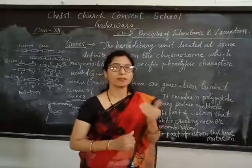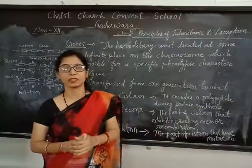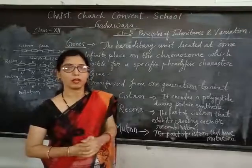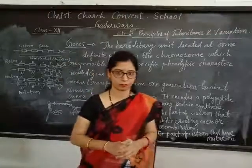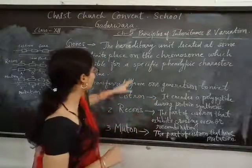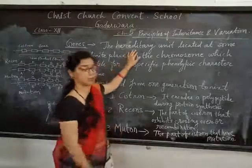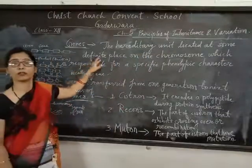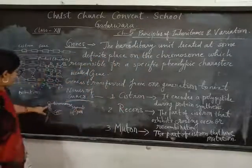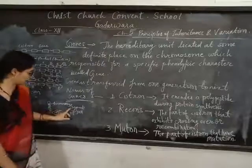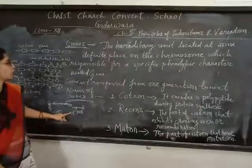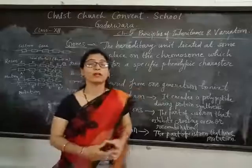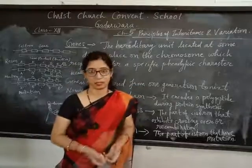Now, as a function, we know that the chromosome is a carrier of genes. So what is a gene? Let's study about the gene. Gene is the hereditary unit - the hereditary unit is located at some definite place on the chromosome. A definite place on the chromosome is a DNA segment which is called a gene, and it is responsible for a specific phenotypic character.